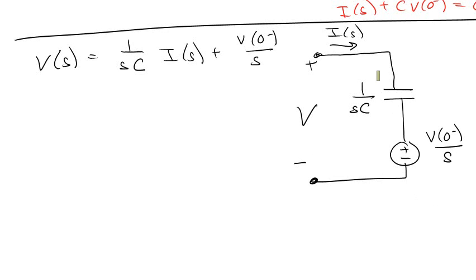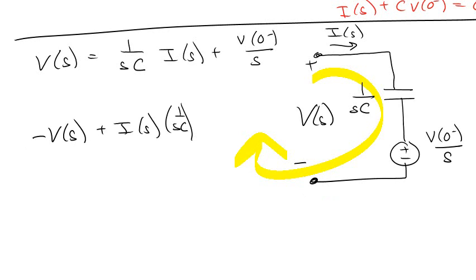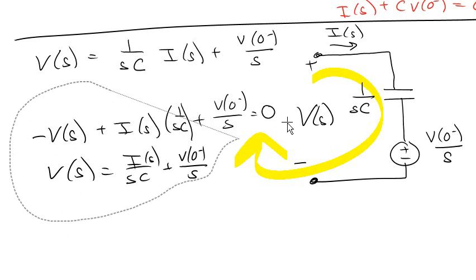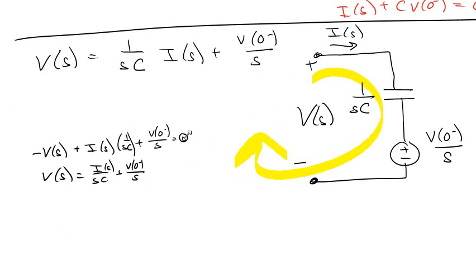So, clearly, I'm going to get my head in the game. If I'm looking to do the loop around this, minus VS plus IS times 1 over SC, and then plus V0 over S equals 0. So that clearly VS is equal to all that mess. I got the same thing. I got what I was supposed to get.